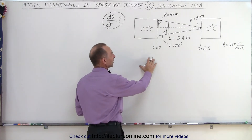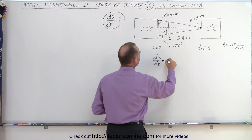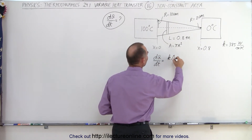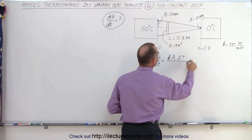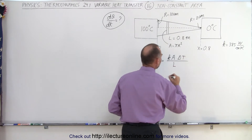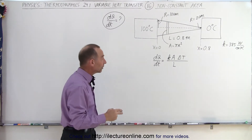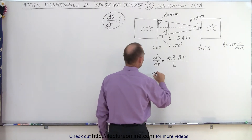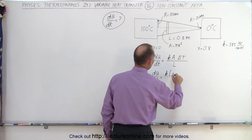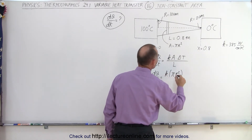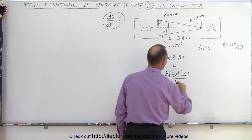The conductivity will be determined by: dQ/dt equals K times A times the difference in temperature delta T, divided by the length of the path L. Here A is going to be πr², and r is now going to be a variable. So dQ/dt equals K times πr² times delta T divided by the length.